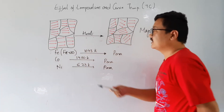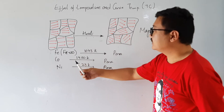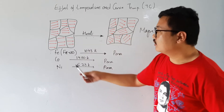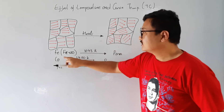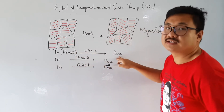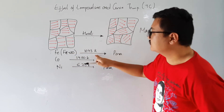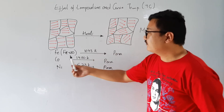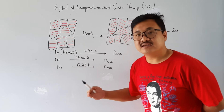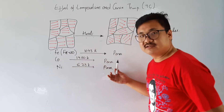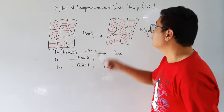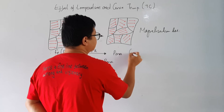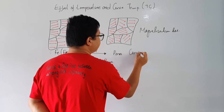Whenever we heat a ferromagnetic material, because of disalignment of the magnetic moments in different directions, it will lose its property and convert from ferromagnetic to paramagnetic. The temperature at which a ferromagnetic material converts itself into a paramagnetic material is called the Curie temperature.